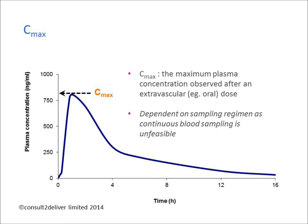CMAX describes the maximum drug plasma concentration observed after an extravascular dose. The parameter value is taken directly from the concentration time curve. It is, though, an artefactual parameter in that it is dependent on the blood sampling regimen used. Therefore, it is an approximation to the true value.